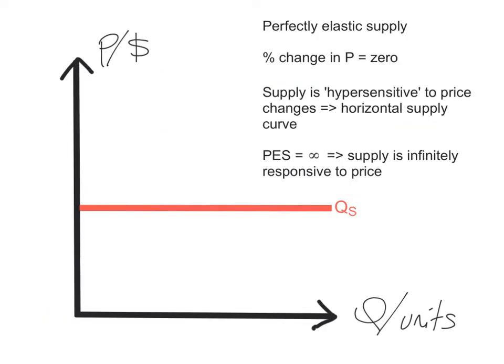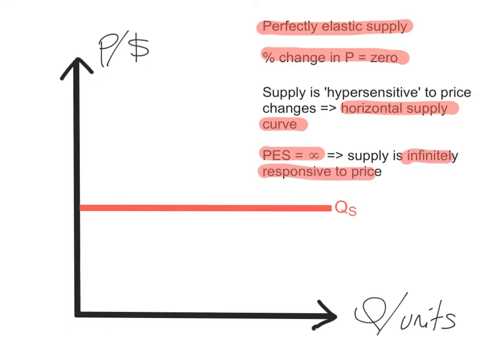With a horizontal supply curve, supply is perfectly elastic. Here the percentage change in price equals 0, so the bottom part of the formula is 0. Anything divided by 0 gives us infinity, so the price elasticity of supply equals infinity. This means supply is infinitely responsive to price changes — if price rises even by a very small percent, quantity supplied will rise from infinity all the way. The price elasticity of supply equals infinity for a perfectly elastic, horizontal supply curve.